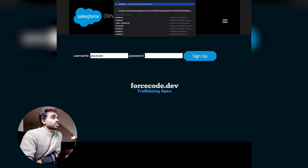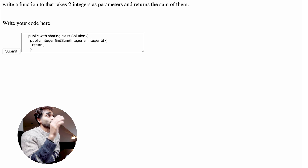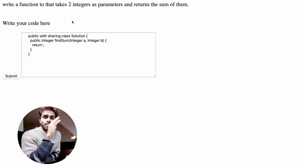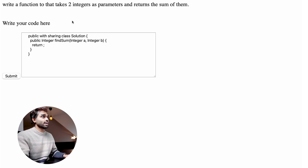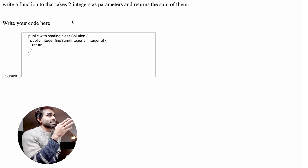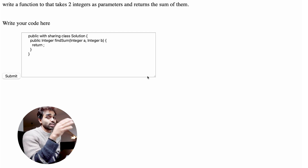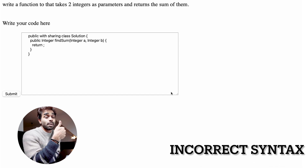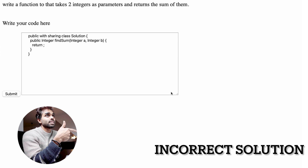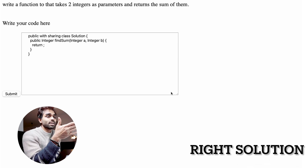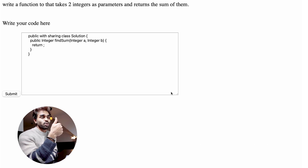I'm already signed in, so let me show you the core functionality. In the code editor, a basic problem loads with boilerplate code. The problem is: write a function that takes two integers as parameters and returns their sum. Just like LeetCode or HackerRank, the editor is preloaded with boilerplate code. In the boilerplate you can see a function called findSum that returns nothing. There are three scenarios: the code fails to compile, the user writes a wrong solution so test cases fail, or the user writes the perfect solution and all test cases pass.